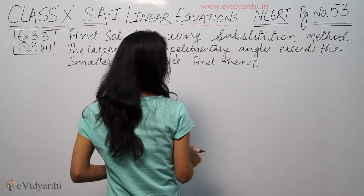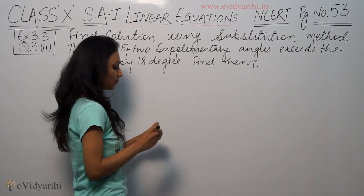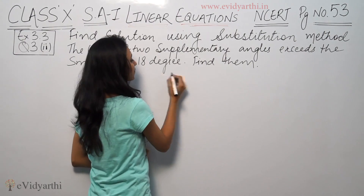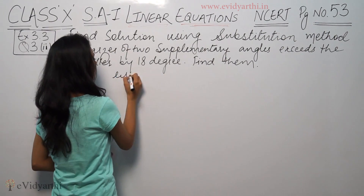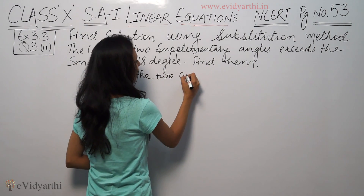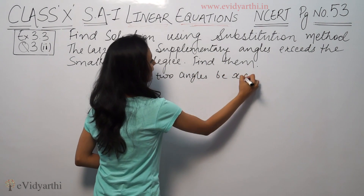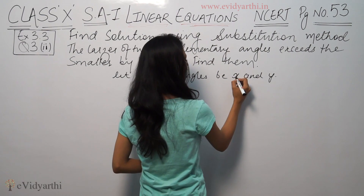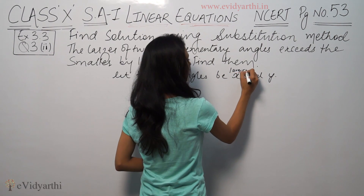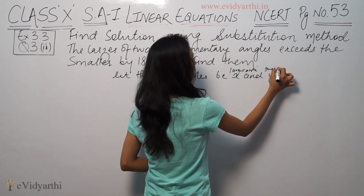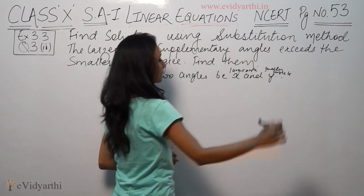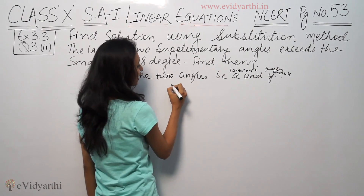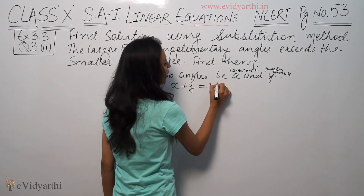The larger of the two supplementary angles exceeds the smaller by 18 degrees. So let the two angles be x and y — the larger angle be x and the smaller angle be y. Supplementary angles means the two angles sum to 180 degrees.